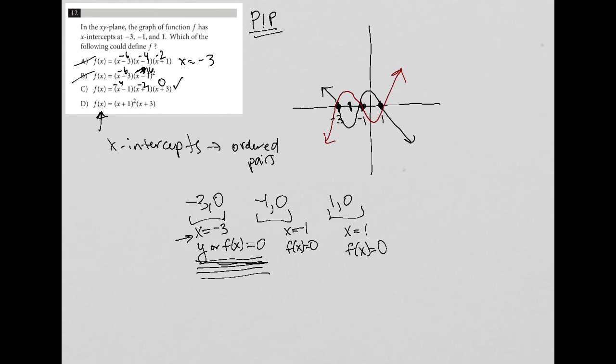And how about for choice D? When I put negative 3 here, that becomes negative 2, but then squared, which is positive 4. And then this becomes 0. So that also works. So based upon the first point, two answer choices are crossed out, A and B, but two answer choices remain.